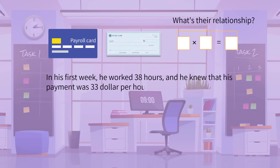Here in this question, we know Jason's hourly wage and his working hours during the week. His total weekly payment would thus be the multiplication of hourly wage and working hours. These two numbers are thus the factors. We can say the product of 38 and 33 is Jason's wage for his first week in the company.